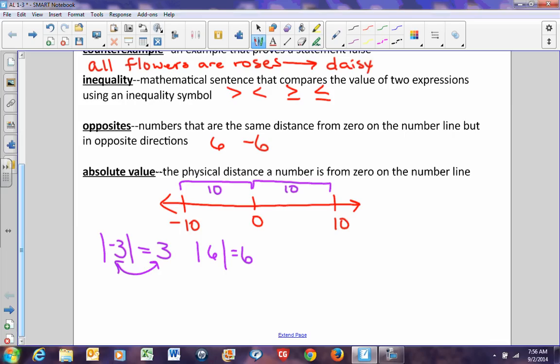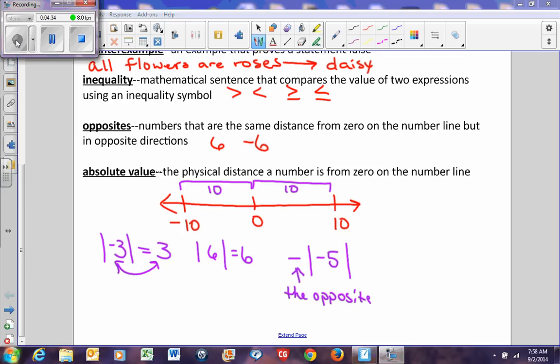The only time you'll see absolute value being negative is when the negative sign is outside the absolute value symbol. For example, this actually says the opposite of... So, in this particular number, it is saying the opposite of the absolute value of negative 5. The absolute value of negative 5 is 5, but the opposite of that is negative 5. This is the only instance where you will see absolute value being negative.